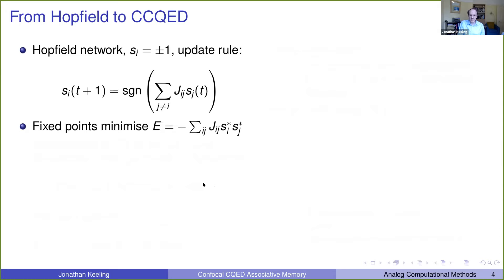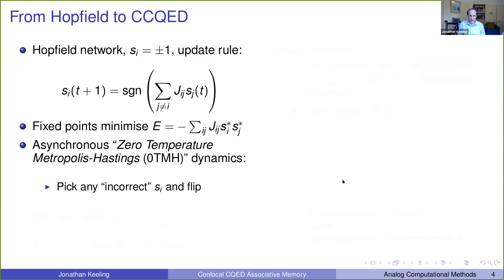Now actually, the process described above is a bit problematic, it can have limit cycles. So what is often typically done is an asynchronous version of this known as zero temperature metropolis Hastings, or zero temperature Glauber dynamics, where what you do is pick any of the spins, which are not aligned along their magnetic field, and flip them, then recalculate all the fields, and then proceed again. And that's guaranteed to eventually stop at some point, and when all the spins are locally aligned, and then you will have found a fixed point.